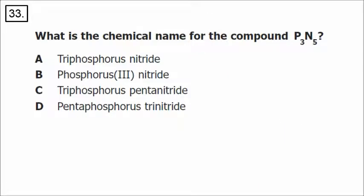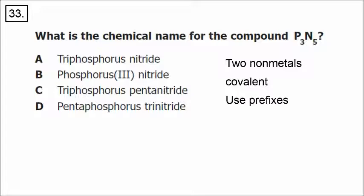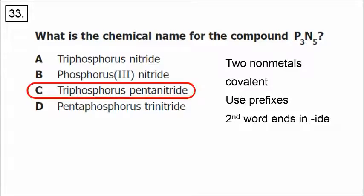In number 33, we are given a compound and have to come up with the name. Phosphorus and nitrogen are non-metals on the right side of the periodic table, so the bonding is covalent. For covalent molecules we use prefixes. In this case, we have prefixes like tri and penta for three and five, and the second word always ends with -ide. So three is tri — triphosphorus — and five is penta — pentanitride.